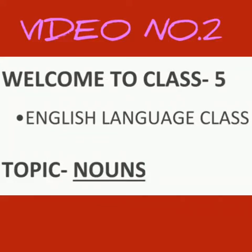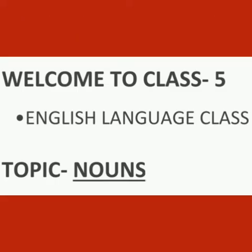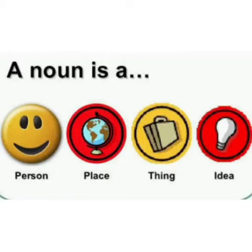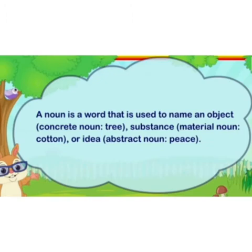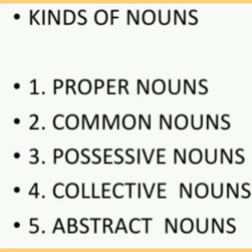Dear children, welcome back to class 5 English language class. This is video number 2 for the topic nouns. Now we all know that a noun is the name of a person, place, animal, thing, or an idea. We talked about the kinds of nouns — there are 5 kinds. The first 2 kinds, proper and common nouns, we have already discussed in the first video. Today we will discuss the third kind of nouns: possessive nouns.